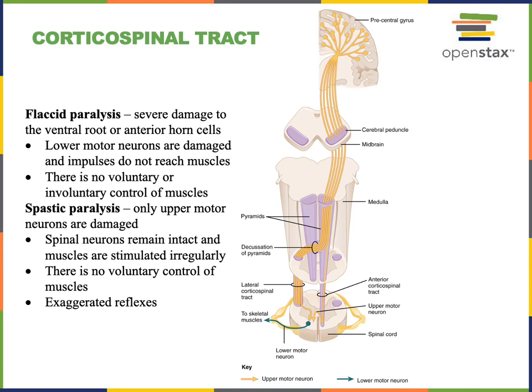This occurs because there is no information modulating the connection between sensory neurons and motor neurons within the spinal cord. Normally, information coming down the corticospinal tract would influence and modulate reflex activity. The loss of that upper motor neuron input leads to an even stronger reflex from the monosynaptic reflex, whose integration center is found within the spinal cord.